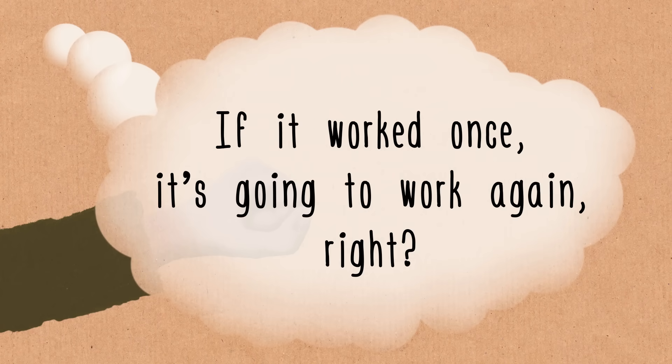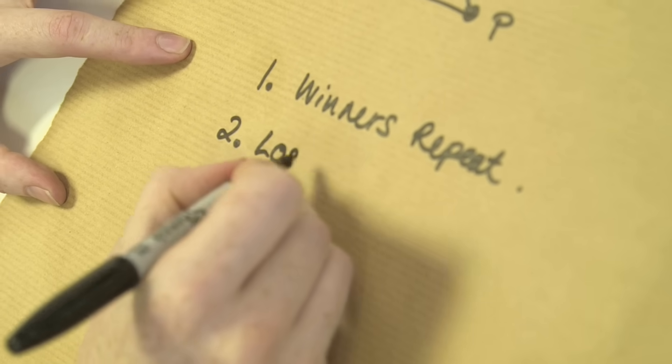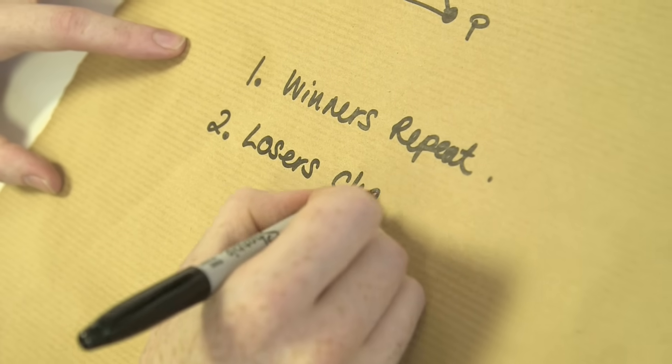But the second thing that they found out is that losers change. Do anything in particular or...? Well, so this is the thing that you can exploit, essentially. So if you know, this gives us, I suppose, two strategies that we can use.